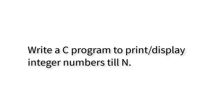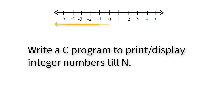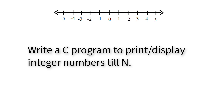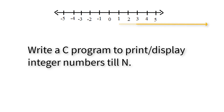Let's write a C program to print integer numbers till n. N will be entered by the user. The user could enter a negative number, a positive number, or a zero, because integer numbers include both positive and negative numbers. If the user enters minus 10, our program must print from minus 1 to minus 10. If the user enters positive 10, our program has to print from positive 1 to positive 10.